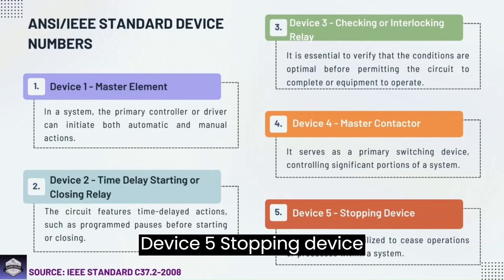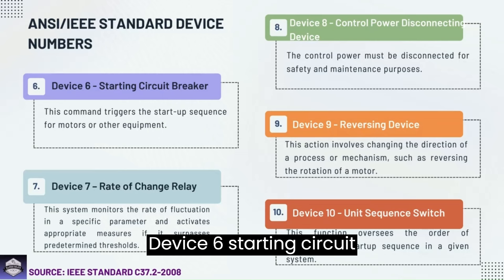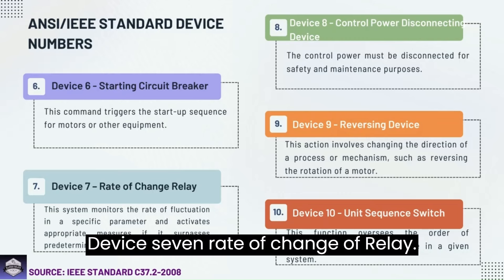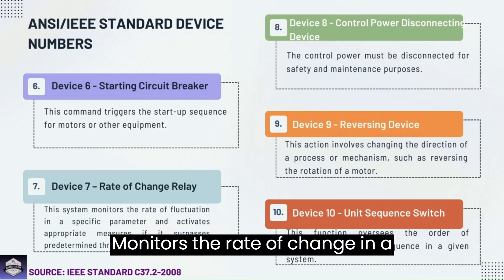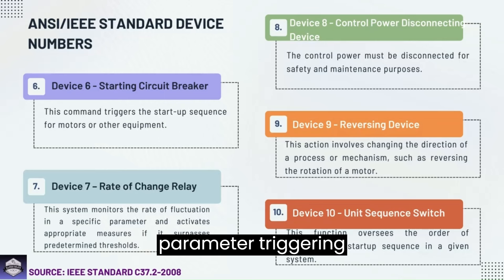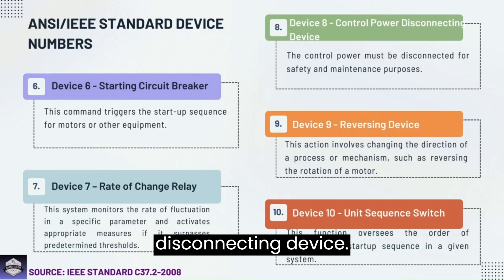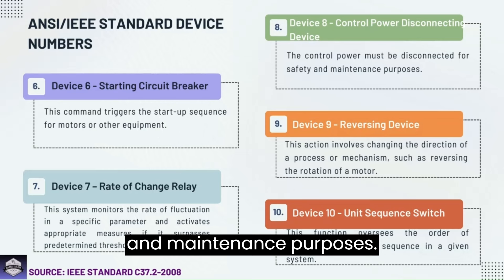Device 6: Starting circuit breaker — initiates the startup sequence for motors or other equipment. Device 7: Rate of change relay — monitors the rate of change in a parameter, triggering actions if it exceeds set limits. Device 8: Control power disconnecting device — disconnects control power for safety and maintenance purposes.